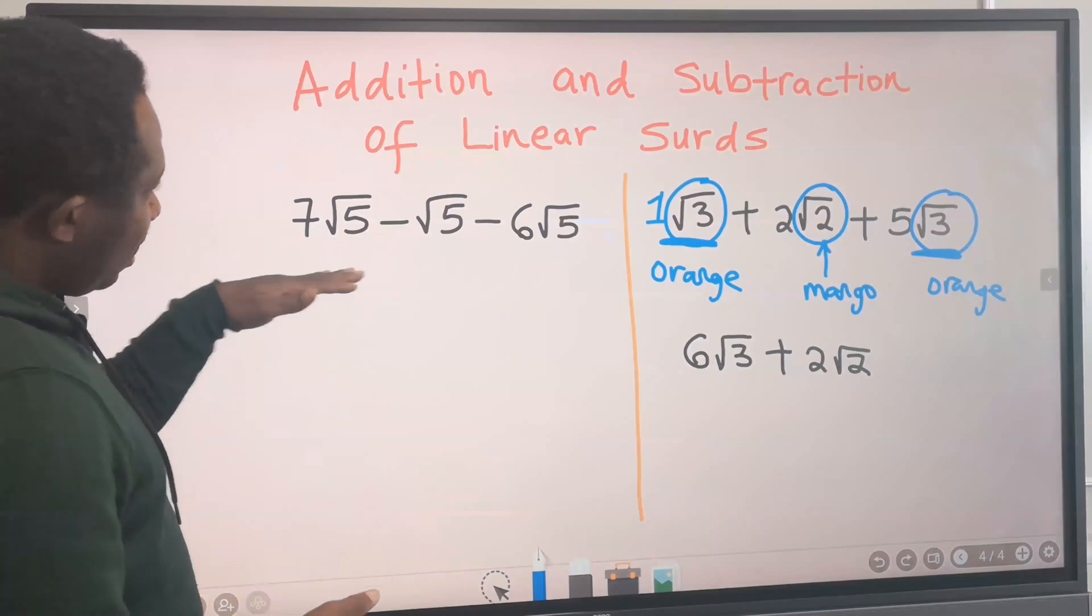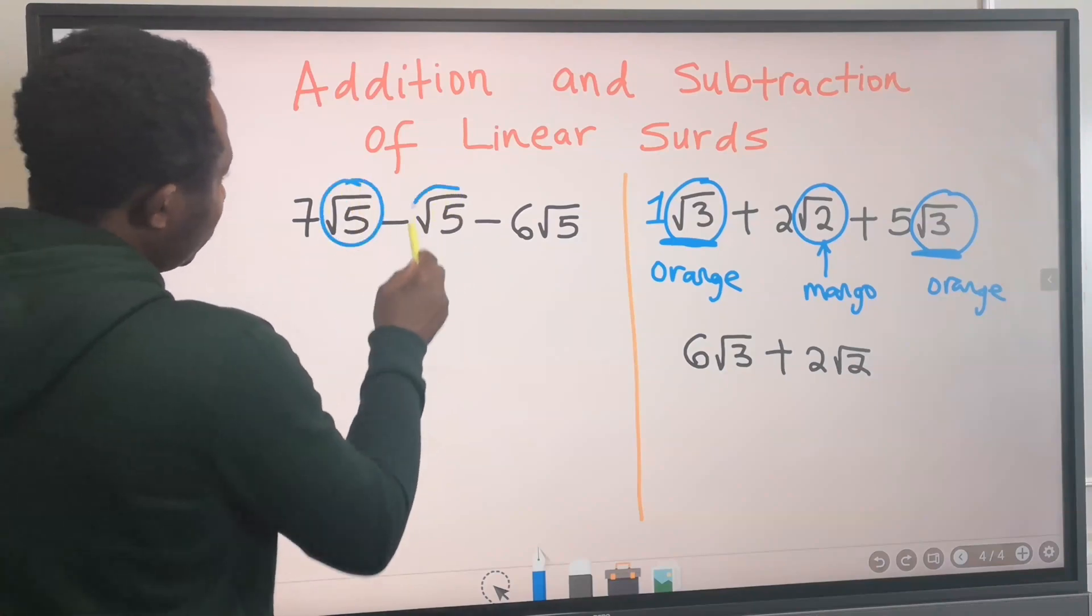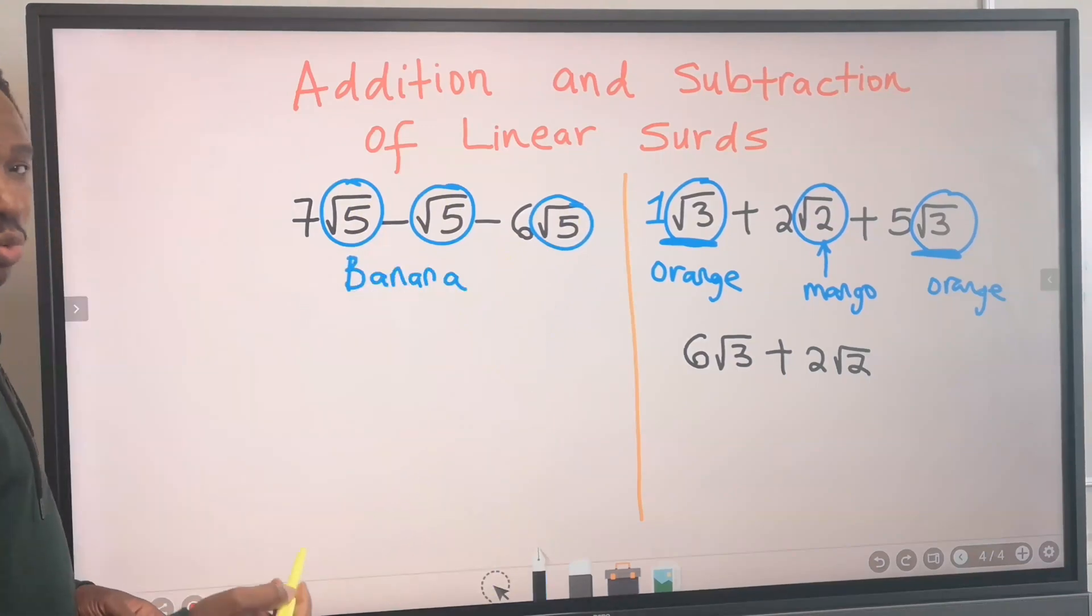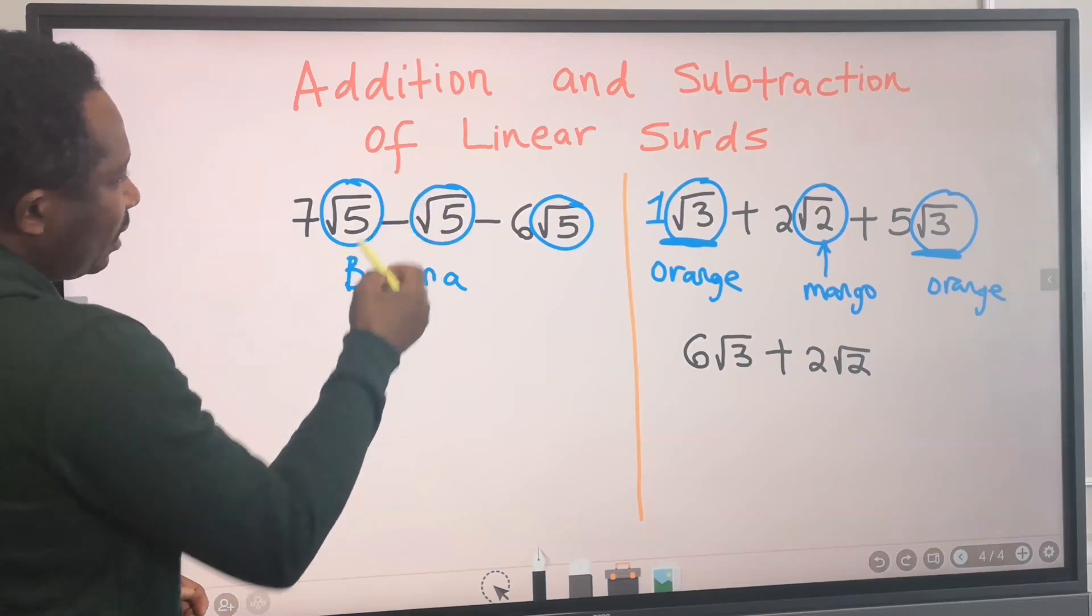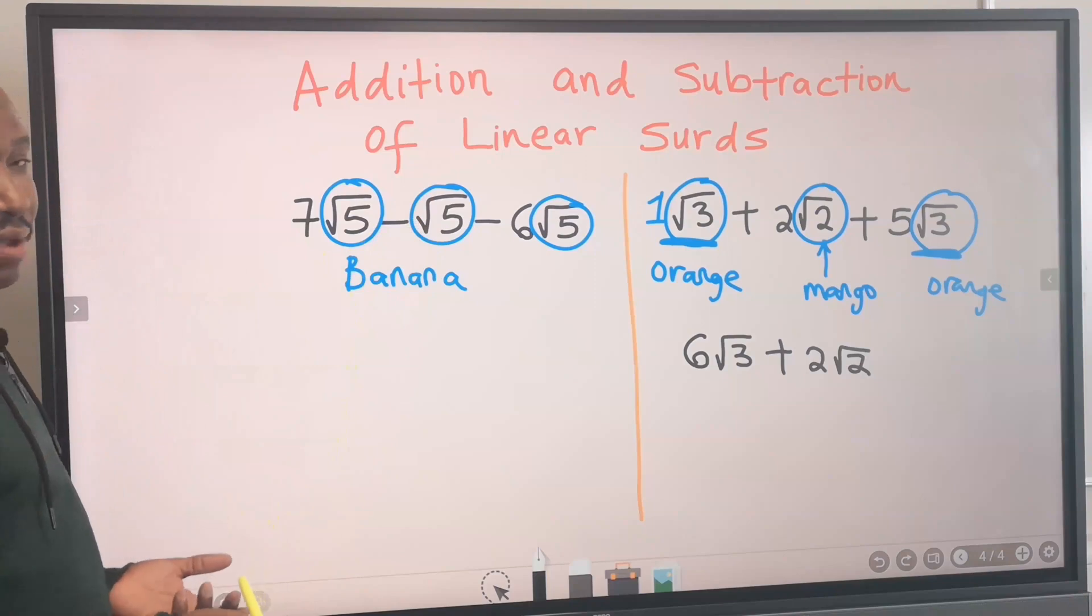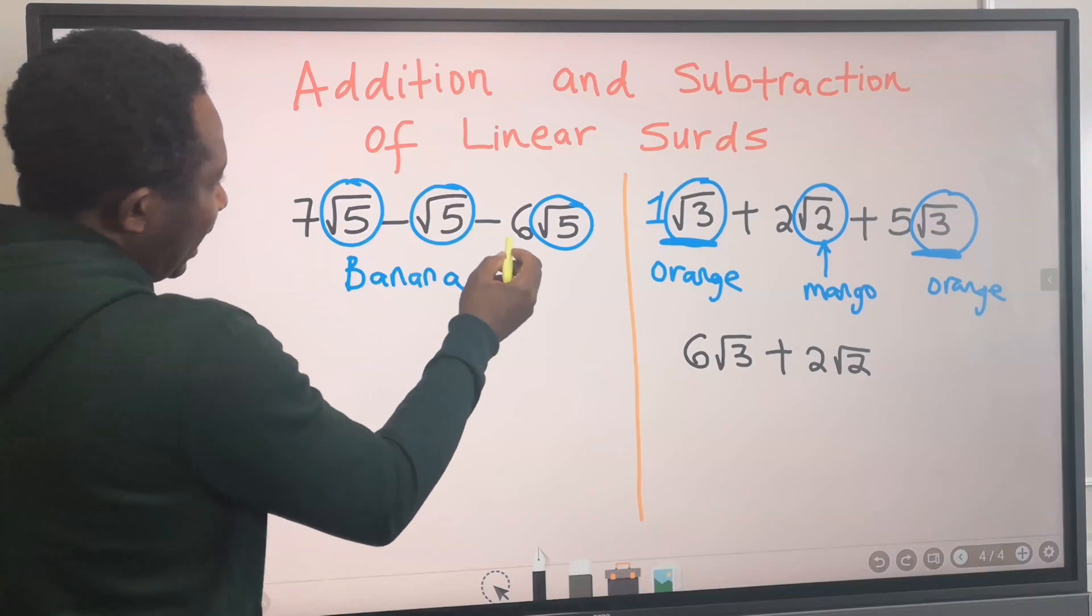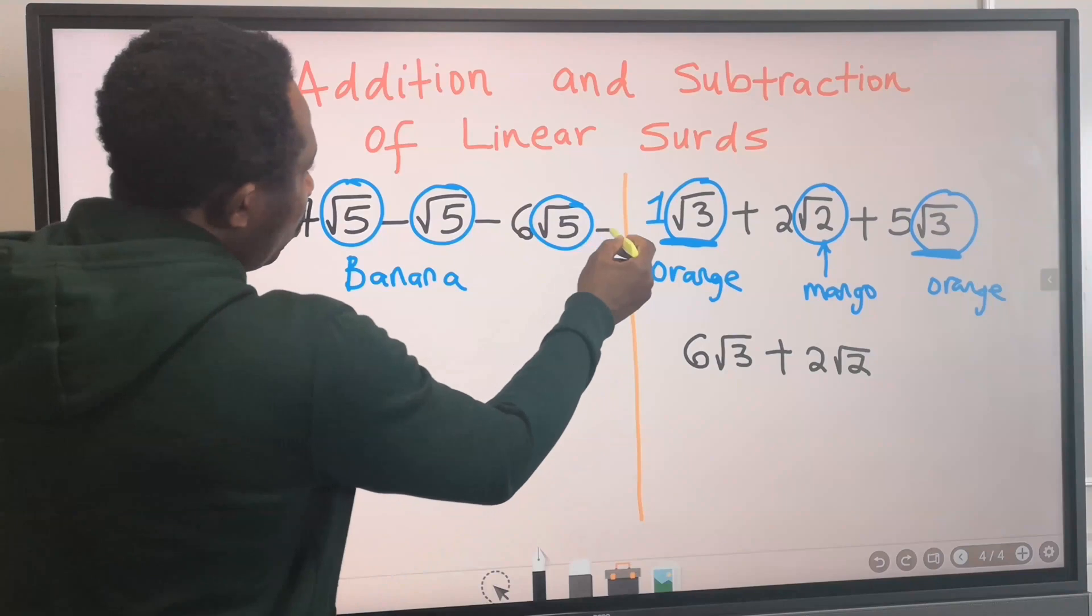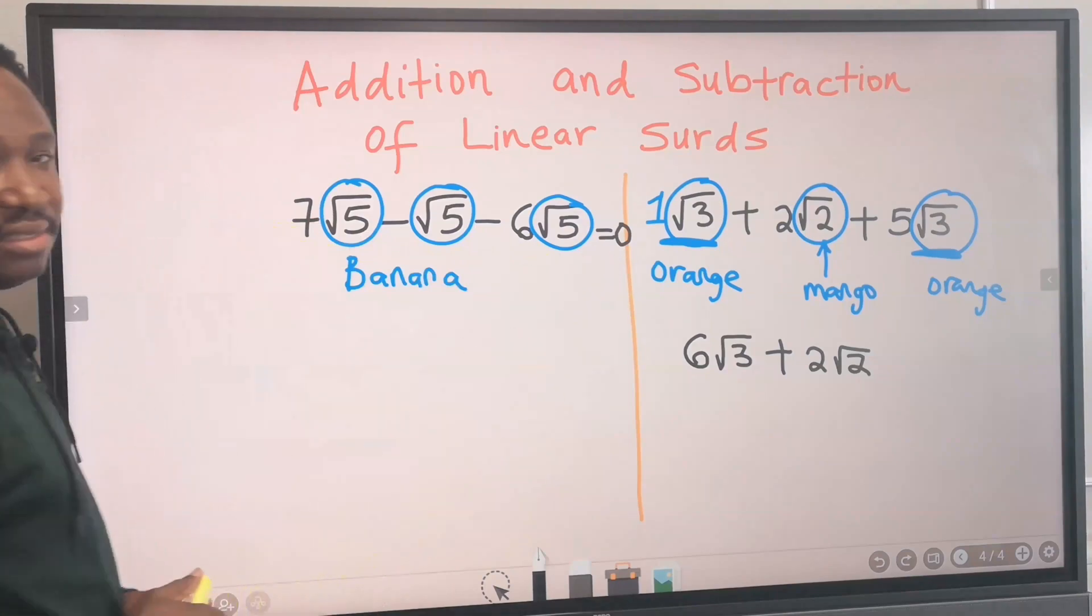Next, let's consider this question. Simplify this surd. If we take each of these, probably to be banana, we are going to say 7 bananas minus 1 banana. We are going to have 6 bananas. The 6 bananas minus the 6 bananas definitely will leave us with 0. This, our answer is 0.